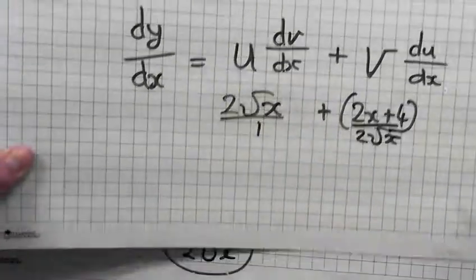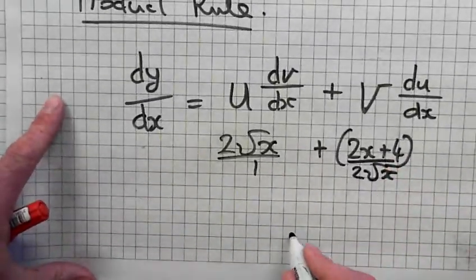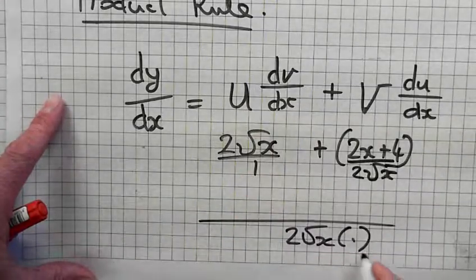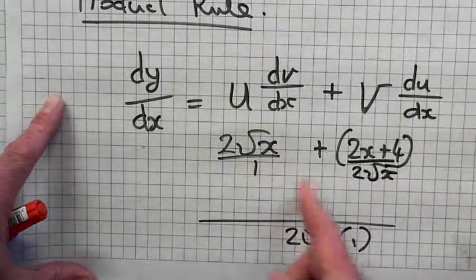Over 1. And I have to add them. What's the LCM? The LCM is 2 root of x in the bottom, times 1, you could say. So you multiply these two to get the LCM.